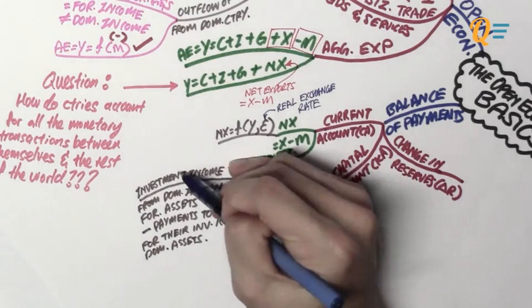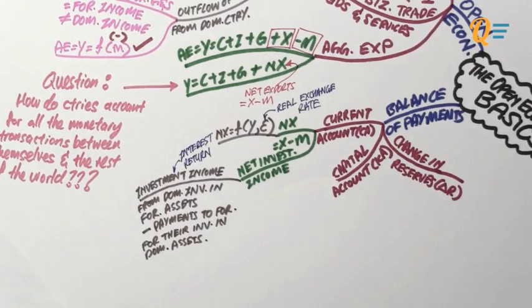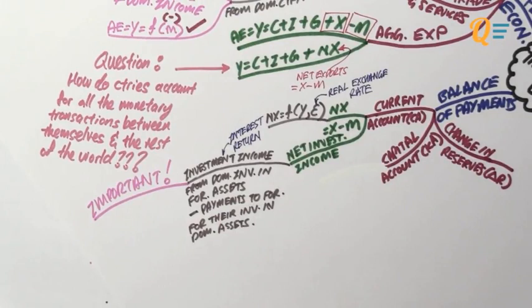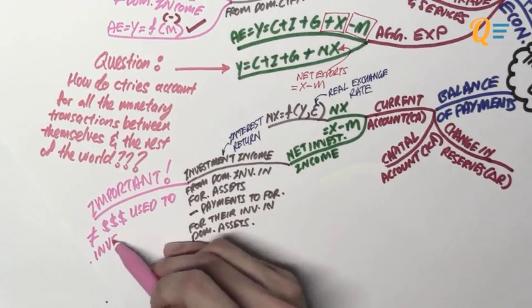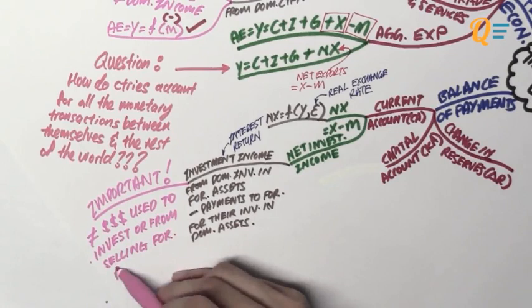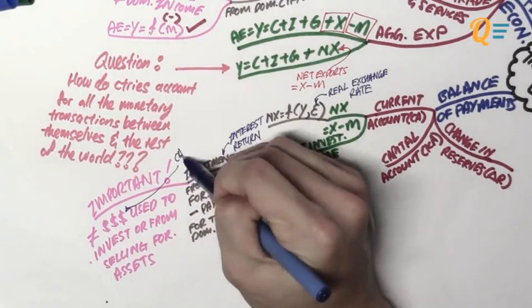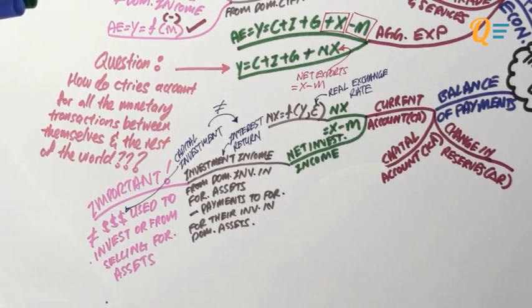Investment income here actually refers to the interest return that you can make from an asset. What's important is that this does not refer to any of the cash that is used to actually go and invest, or the cash that you get from selling any of your foreign assets. I'm talking about the amount of money that you need to use to buy that asset — this amount of money is actually known as the capital investment. Capital investment is not the same as interest return. Your capital investment is the principal, and this will be accounted for in the capital account, which we'll be talking about later.